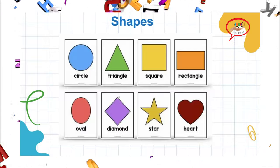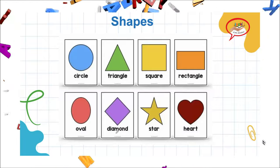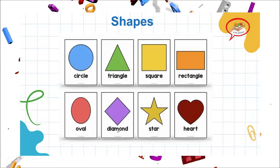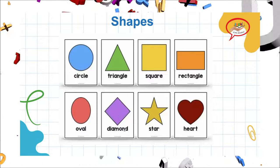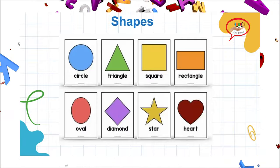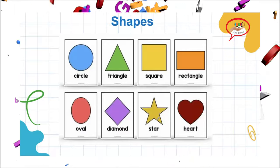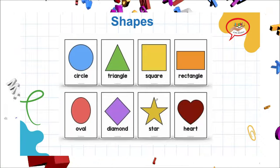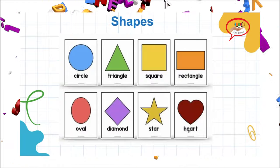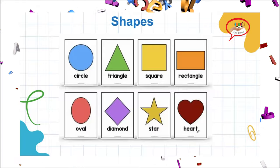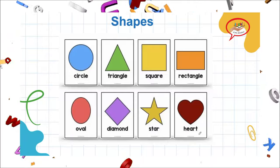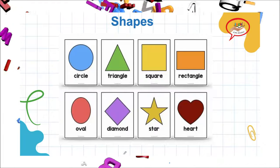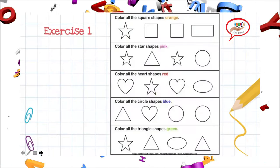Our next shape is a diamond. Diamond. Nuestra siguiente figura es un diamante. Diamond. Diamante. Our next figure is a star. Star. Nuestra siguiente figura es una estrella. Star. Estrella. Our next figure is a heart. Heart. Corazón. Heart. Corazón.